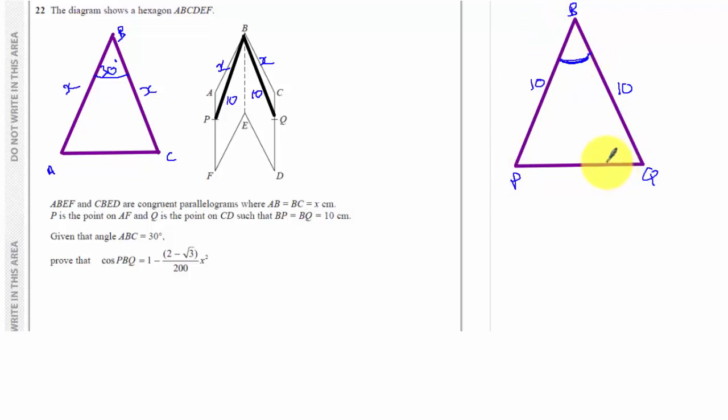Now, one of the key things in this question to recognize is that the length AC here, which I'm going to call Y, is the same as the length PQ. You see that from the diagram. So those two are the same length.